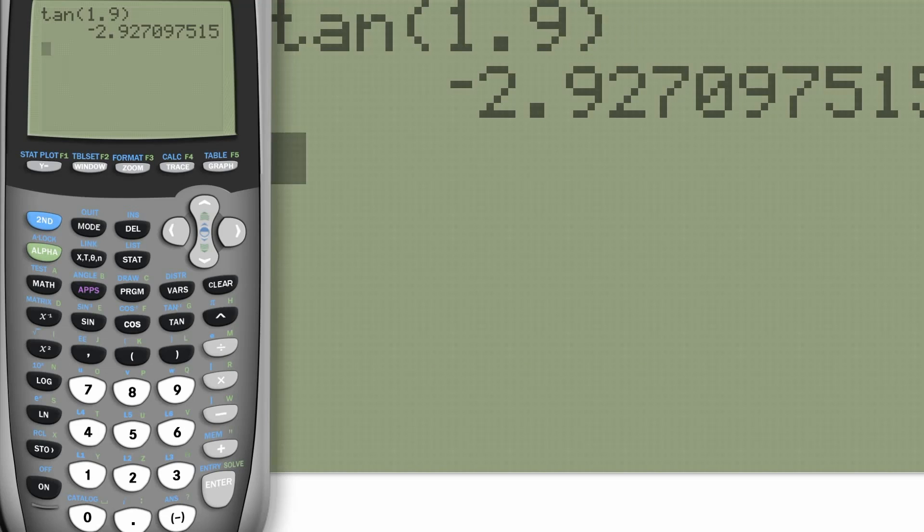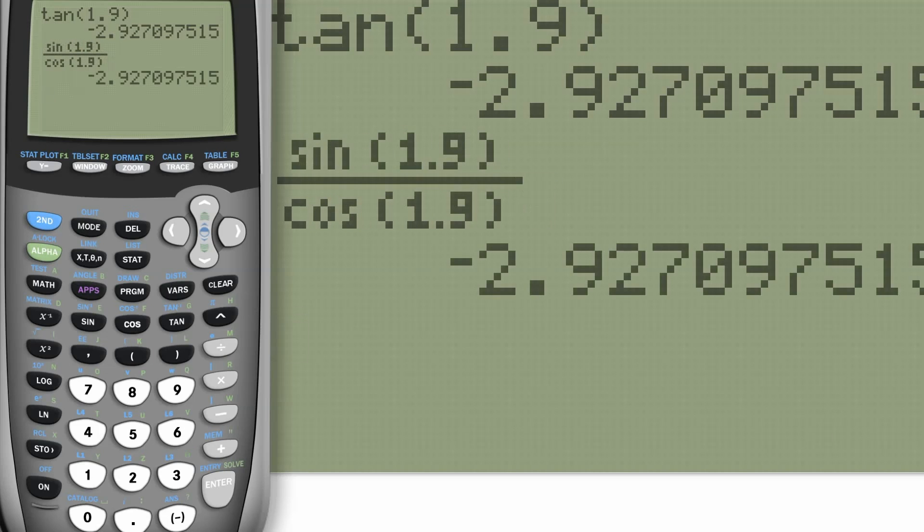Now, we can check the other side. I'm going to put it in like this, and we're going to go sine of 1.9 divided by cosine of 1.9. And we get that same value. Right? We could do the same thing.